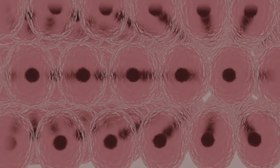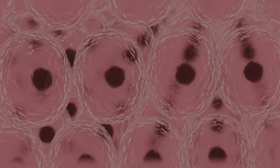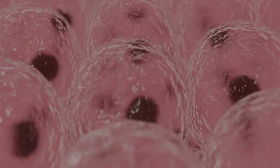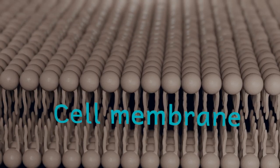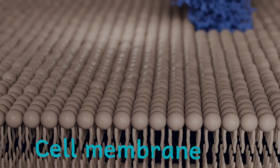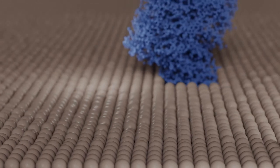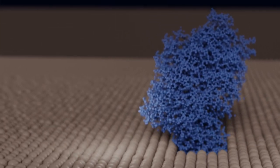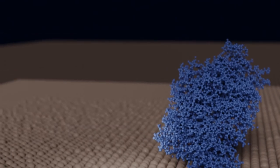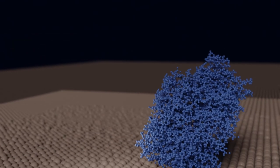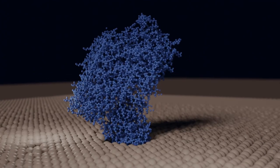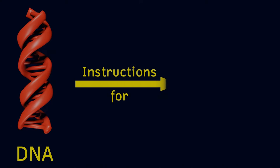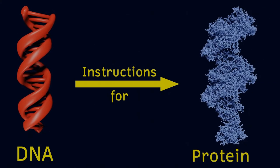All animals are multicellular and so the cells in our bodies need to be able to communicate with each other. One way in which this happens is through a type of protein called a receptor tyrosine kinase. These proteins are found embedded in cell membranes and allow cells to communicate and by doing that control the activities of individual cells. All animals have these proteins and these proteins are coded for by a specific set of genes.